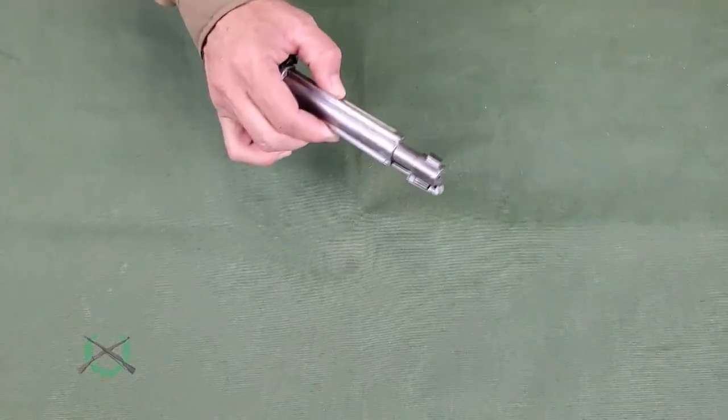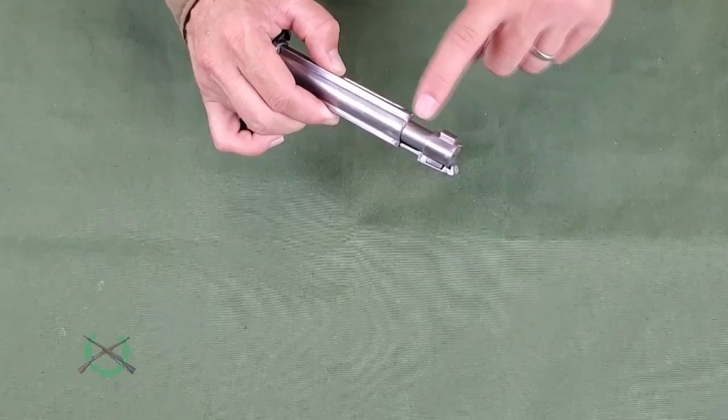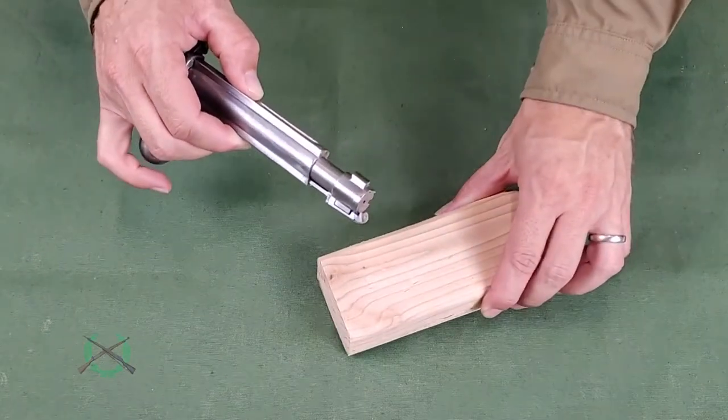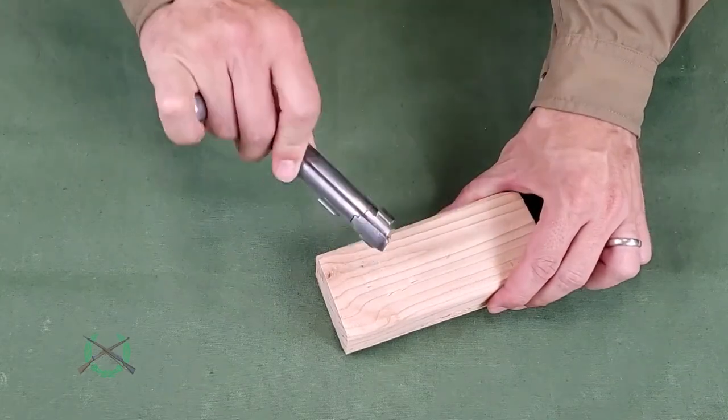With the bolt removed, decock the bolt by rotating the bolt head into the bolt body. This is most easily done by tapping the bolt head on a hard surface that will not damage the bolt.